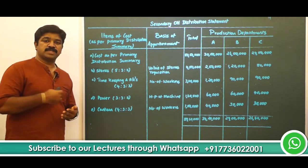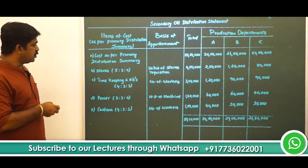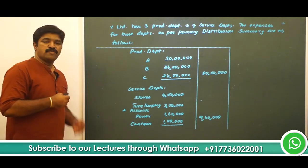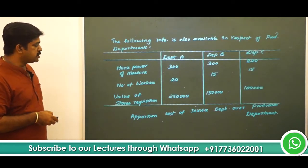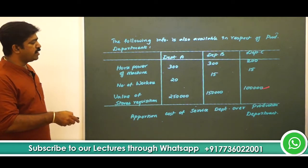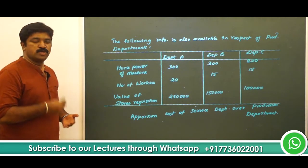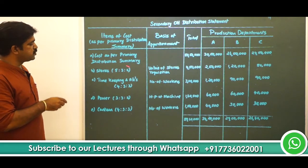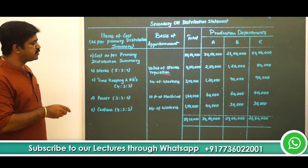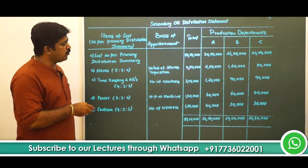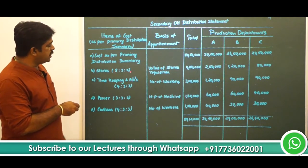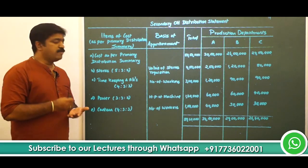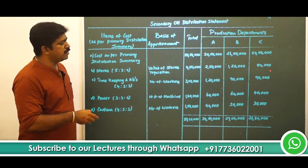Now let us take the respective service departments one by one. First, we take stores. The stores amount of 4 lakhs has to be apportioned over 3 departments in the ratio 5:3:2 — derived from 25:15:10. The basis of apportionment is the value of stores requisition, and the total amount is 4 lakhs. 4 lakh divided by 10, multiplied by 5, 3, and 2, gives us 2 lakhs, 1,20,000, and 80,000 respectively.